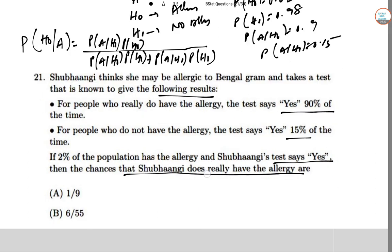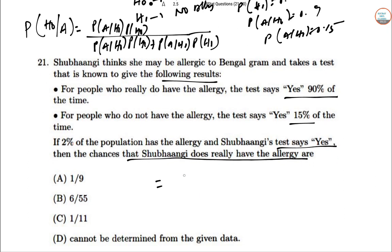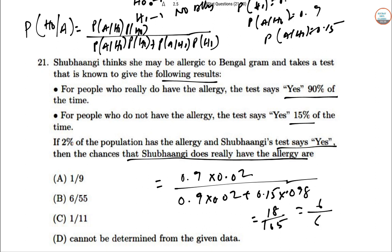So if we calculate this: 0.9 × 0.02 divided by (0.9 × 0.02 + 0.15 × 0.98). Once calculation is done, this is 18/165 or 6/55. So the answer is B.